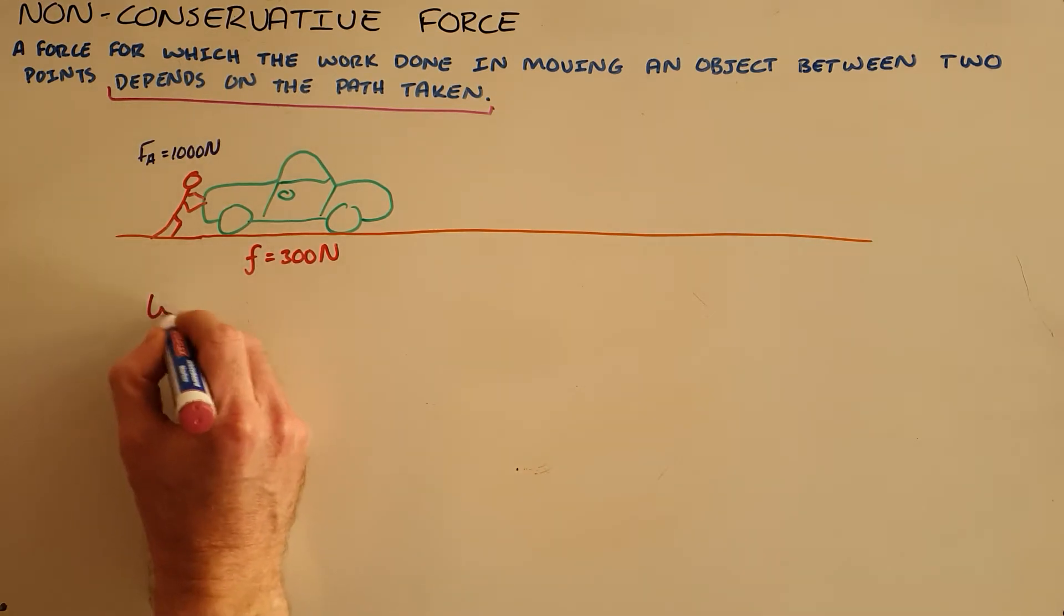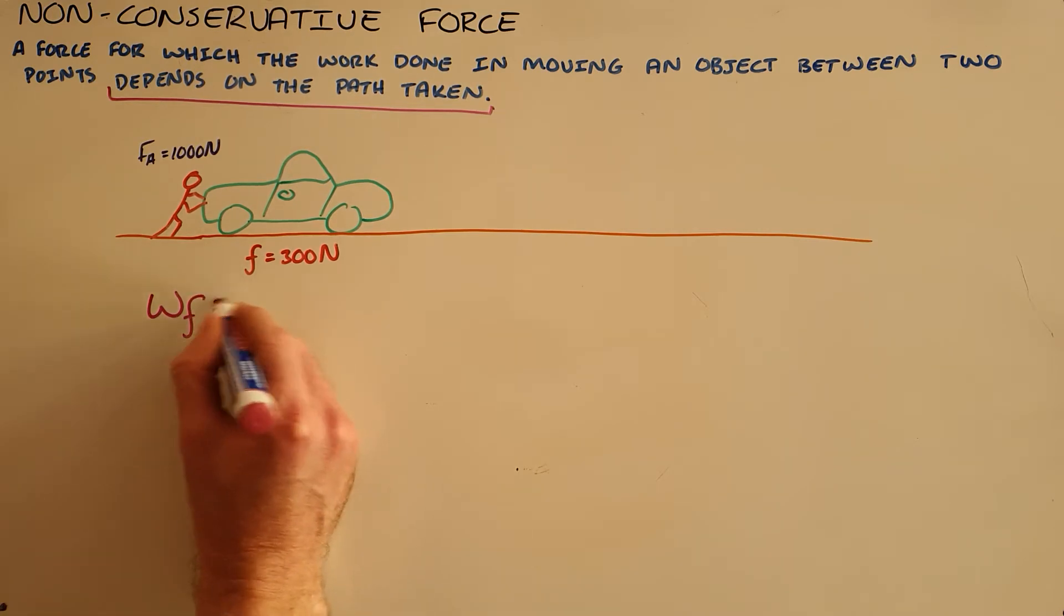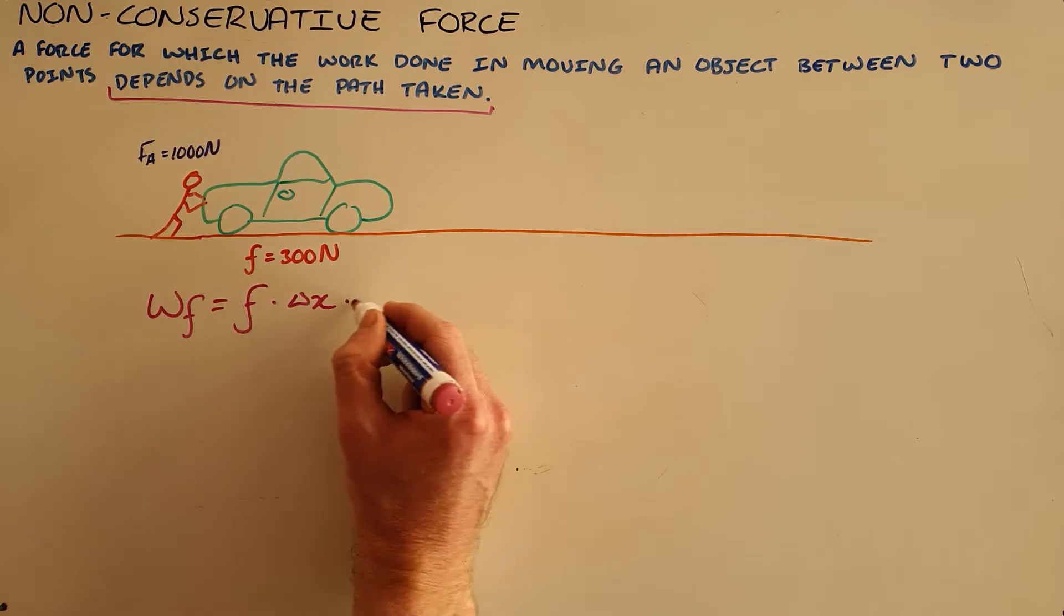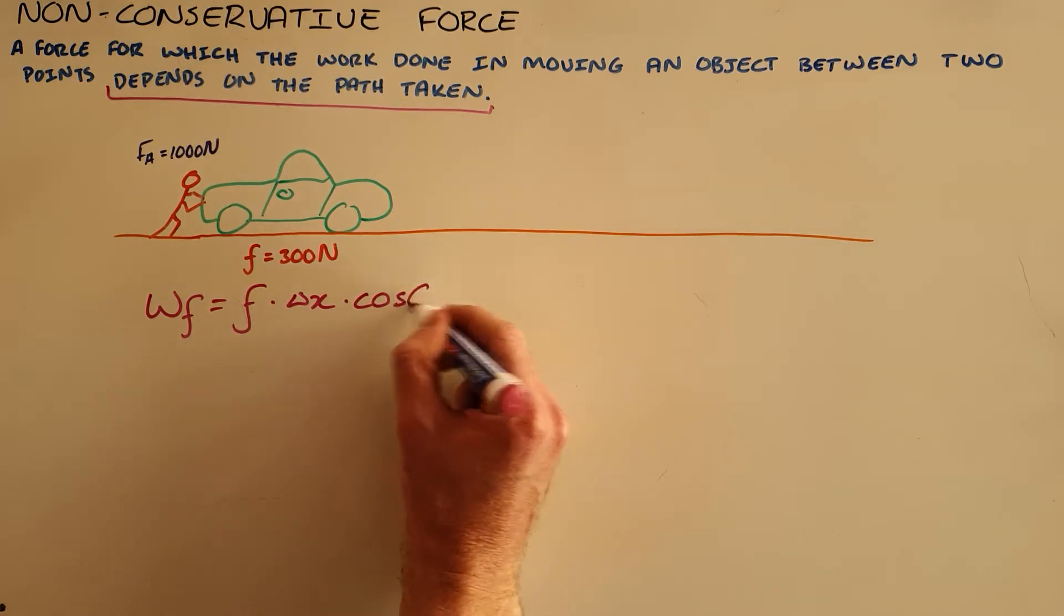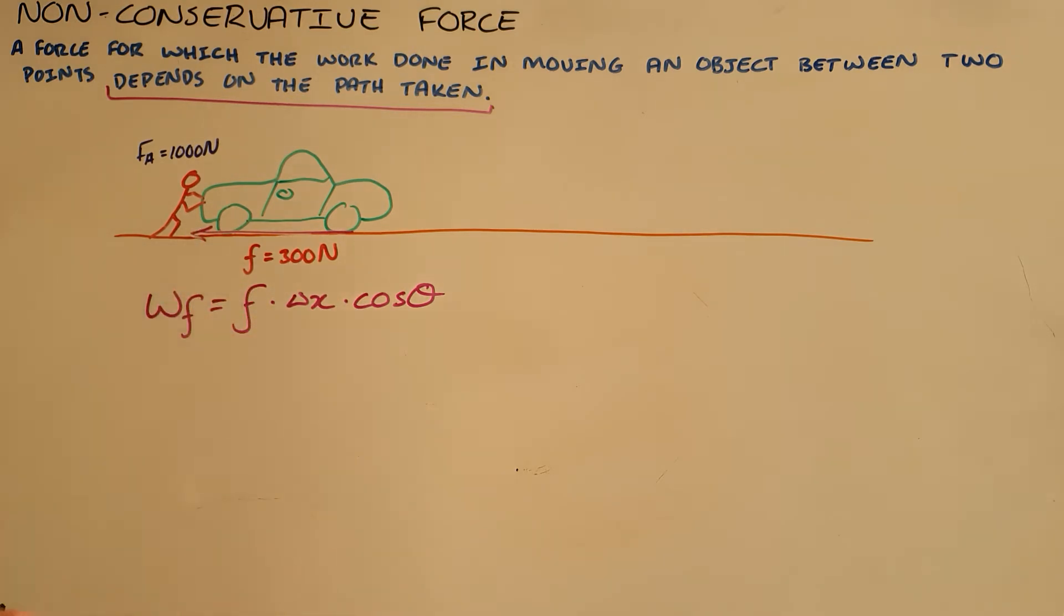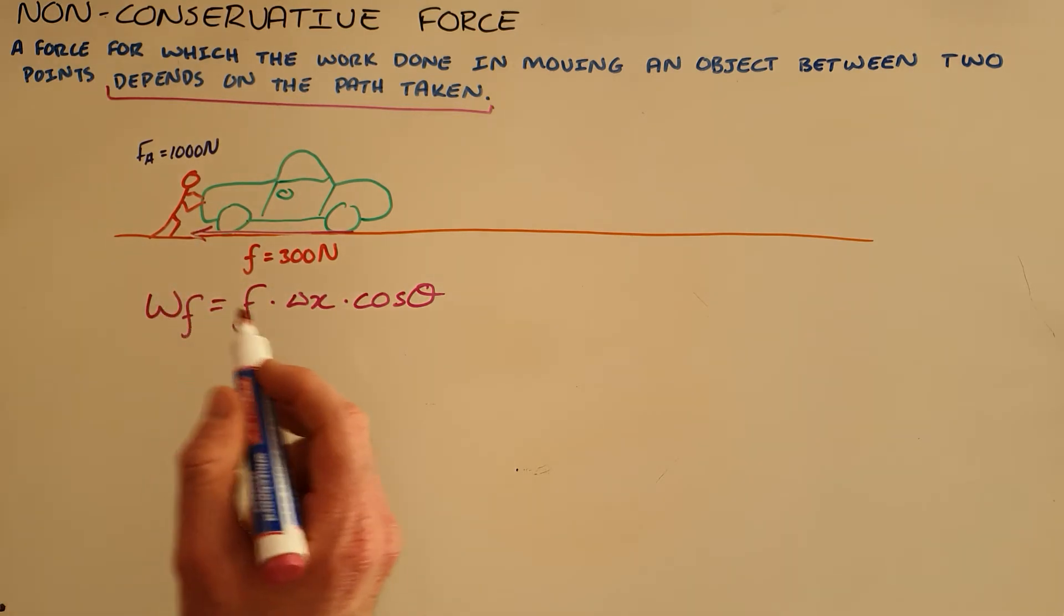We can say that the work done by the frictional force is equal to friction times the displacement of the object times the cosine of the angle between the two. Now we know that friction always acts parallel to the surface in the opposite direction to motion.